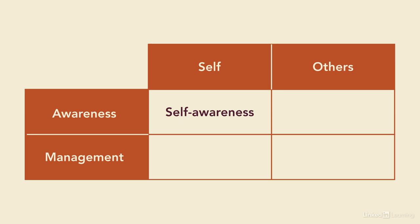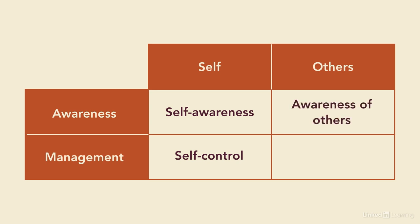The next area is self-control, which is about managing your emotions and actions in productive and healthy ways. The third area is our awareness of others — knowing their emotions and needs, as well as their skills, preferences, and other aspects of diversity — and it's also about extending empathy. Finally, the fourth area is building relationships and how we utilize our awareness of others to maximize their potential and our relationship.